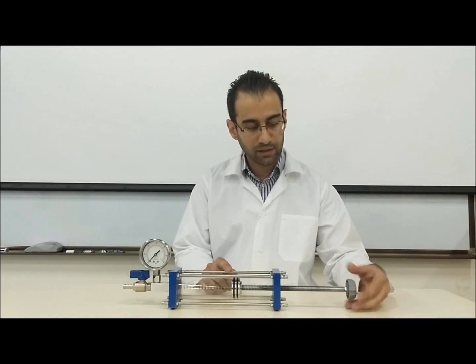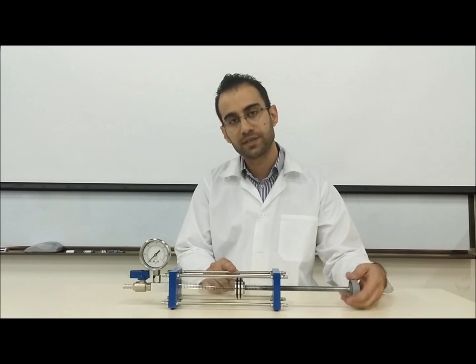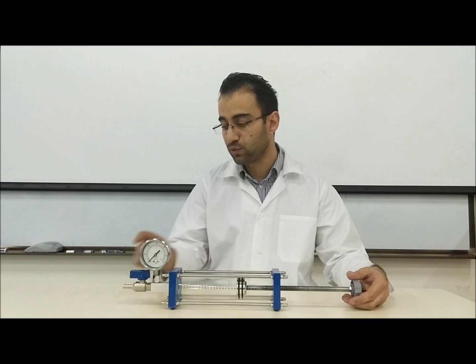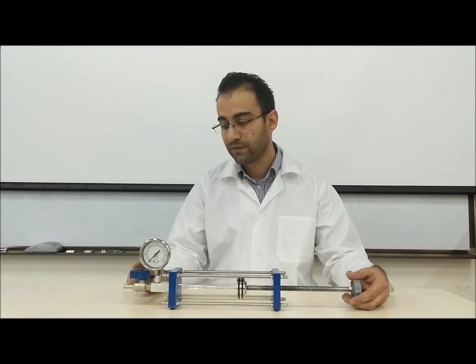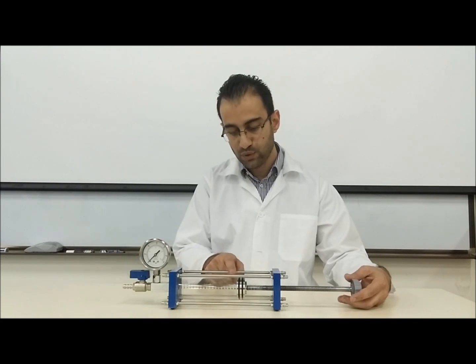We'll turn anti-clockwise until the rubber stopper moves further to 20 cubic centimeters. While doing that, we need to make sure the valve is open. Valve is open means the handle is in line with the valve.